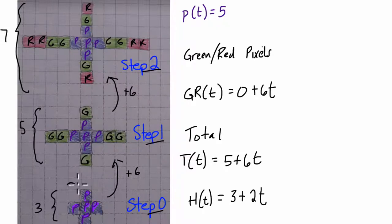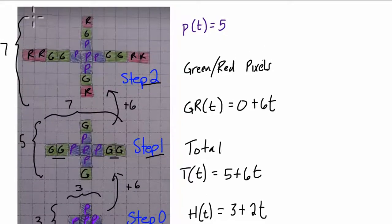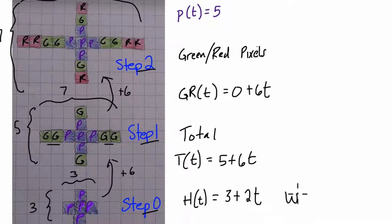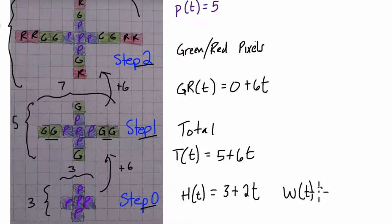Now, the width also starts at 3, but then the width goes a different way because the width adds 2 on each side, so it adds 4 altogether. So the next width is 7. The width after that is another 4. It's 11, so it goes 3, 7, 11. Notice it's going up by 4s. So the width as a function of time starts off at 3, and then it adds 4 for every step. So that's the equation we should have.